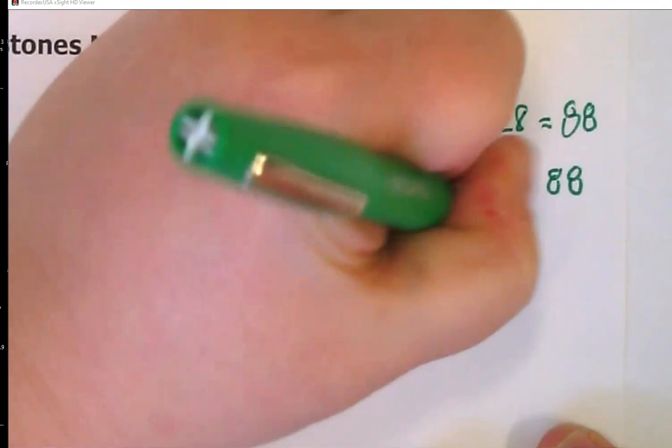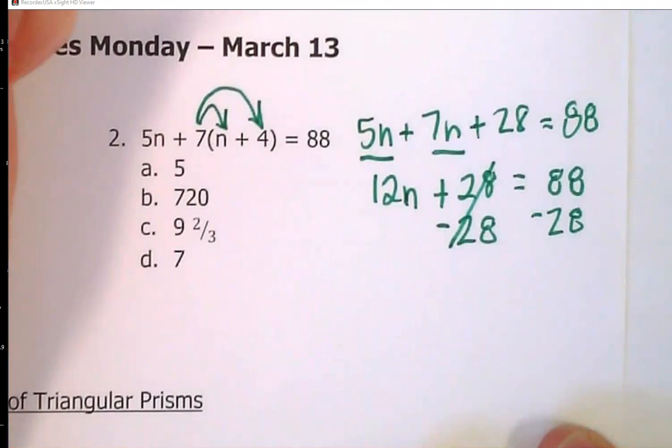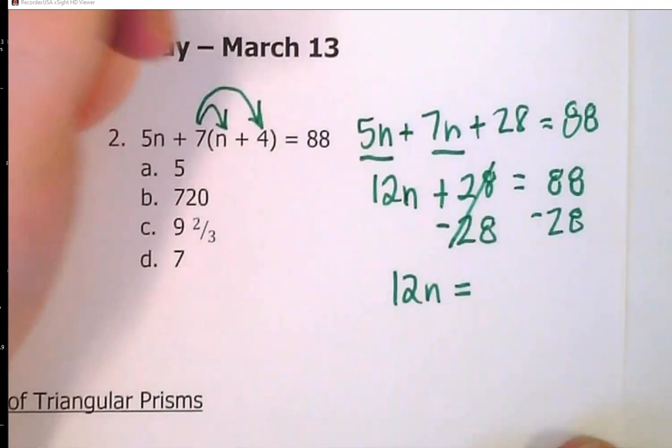I'm positive and negative. It's an opposite pair, so they don't exist anymore. So now I have 12n equals 88 minus 28, so 12n equals 60.